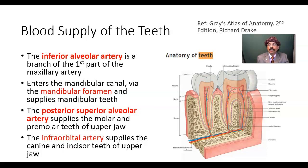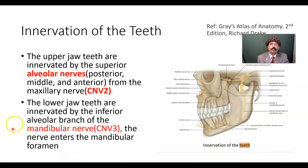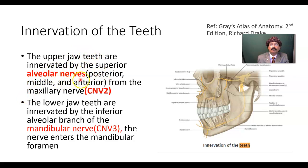Now I'll go to the nerve supply — the innervation of the teeth. The upper jaw teeth are innervated by the superior alveolar nerve. We have posterior, middle, and anterior groups of superior alveolar nerves, and they are derived from the maxillary nerve.